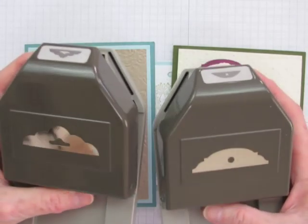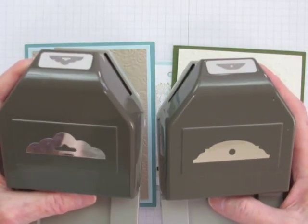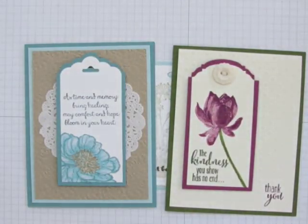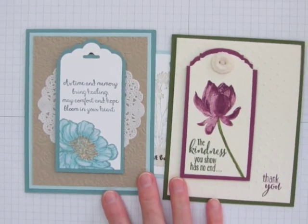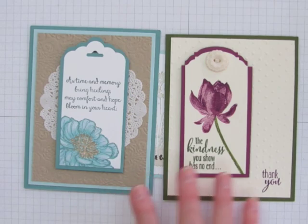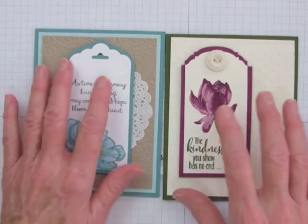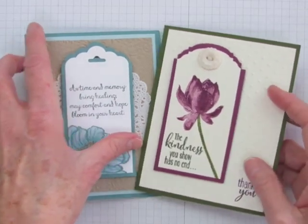These two tag topper punches from Stampin' Up will dress up any handmade card or papercraft project as you can see from these two. But cutting a mat for them isn't as obvious as for the angled top tag. The process is quite simple. It just uses a little magic.